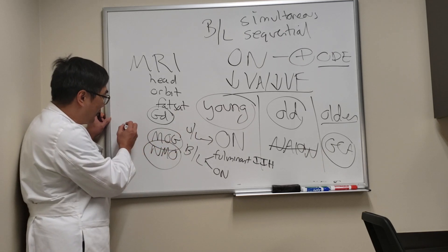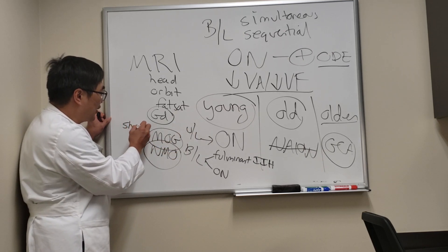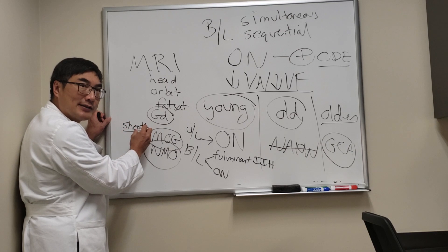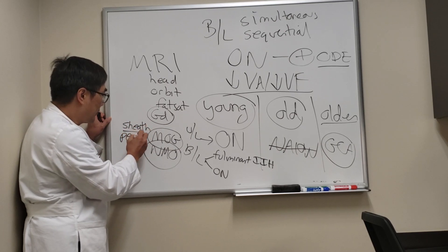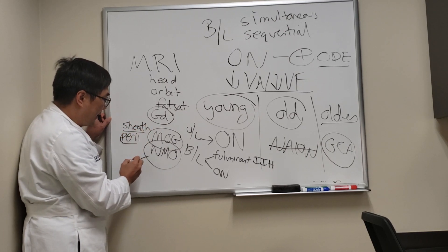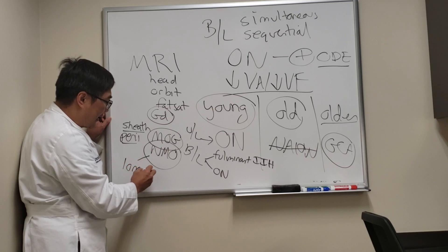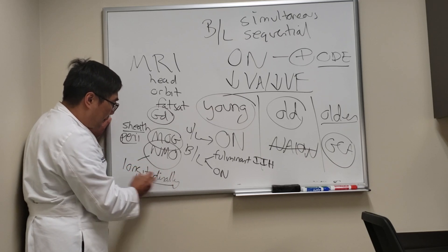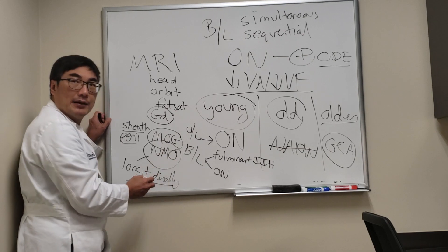The two patterns we're looking for are optic nerve sheath enhancement (that's the perineuritis, it's round) and longitudinally extensive enhancement in both NMO and MOG, but especially NMO.